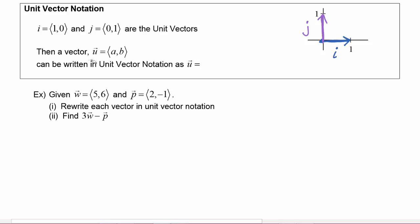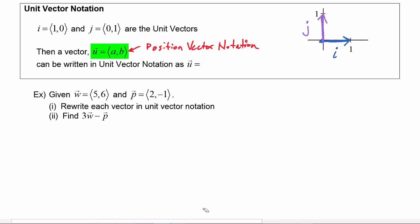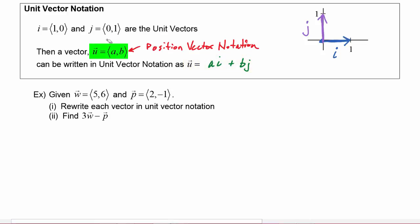If we start with a vector u equals the vector (a, b) — remember, this is position vector notation — we could rewrite the vector (a, b) in unit vector notation as vector u equals a times i plus b times j. This is a more algebraic-looking notation, whereas position vector notation is more coordinate-plane oriented. In trigonometry we expose you to different types of notation you might run into later in physics or elsewhere.